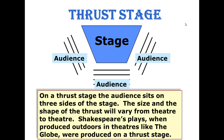On a thrust stage, the audience sits on three sides of the stage. The size and shape of the thrust stage will vary from theater to theater. Shakespeare's plays, when produced outdoors in theaters like The Globe, were produced on a thrust stage. It's simply called a thrust stage because the stage thrusts out directly into the area of the audience.